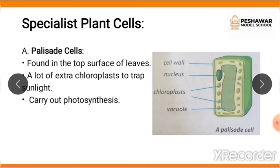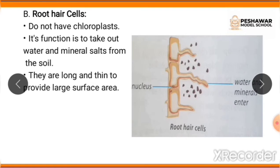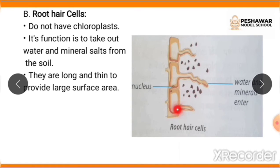Next are root hair cells. The structure is also shown in the diagram — you can see the nucleus, and where water and minerals enter. The highlighted structures are the root hair cells, with the hair-like projections visible. They are meant for the extraction of water and minerals from the soil, and they do not have chloroplast.